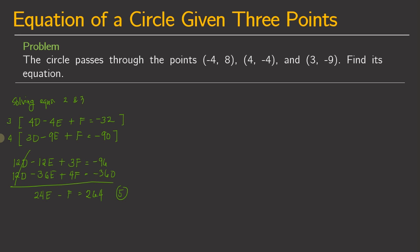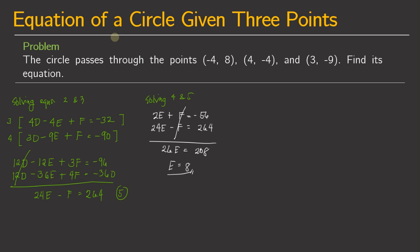Now solving equations 4 and 5. Equation 4 is 2e plus f equals negative 56, and equation 5 is 24e minus f equals 264. We can cancel f by addition. 2e plus 24e is 26e, and negative 56 plus 264 is 208. Dividing both sides by 26, e equals 8. So we have the value of e, which is 8.